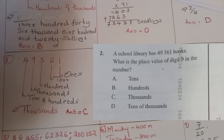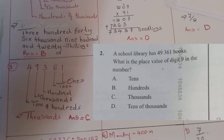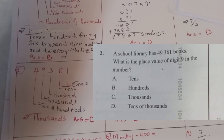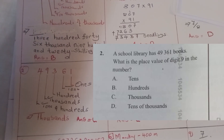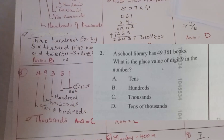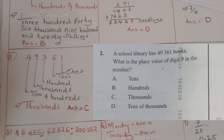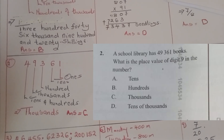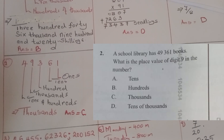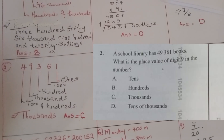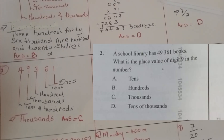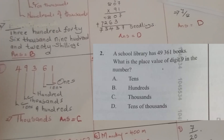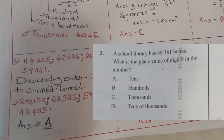Question two: a school library has 49,361 books. What is the place value of digit nine in the number? From the working, digit one is ones, digit six is tens, digit three is hundreds, digit nine is thousands, and digit four is ten thousands. So the correct answer is C — thousands.